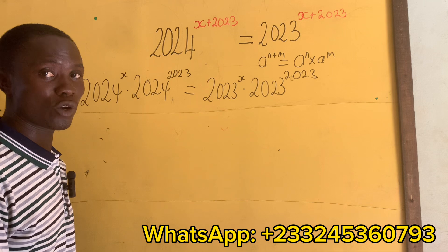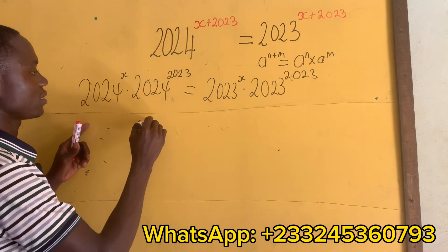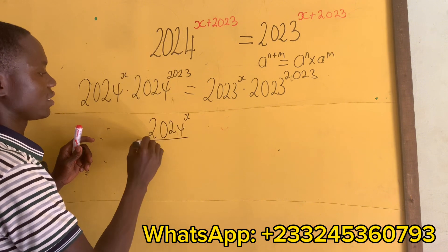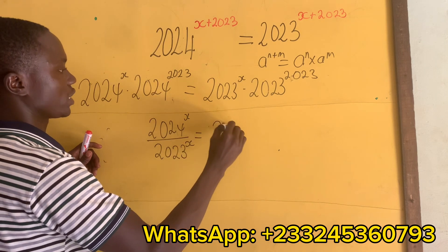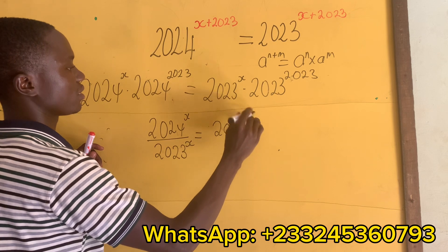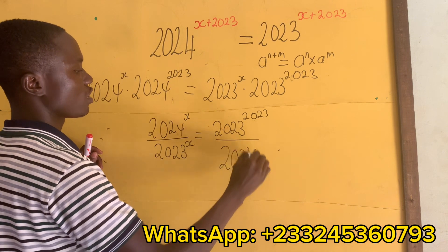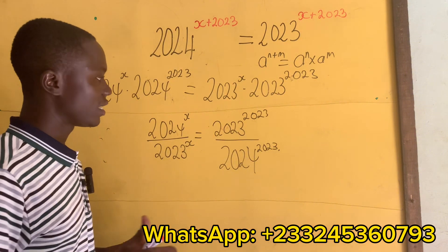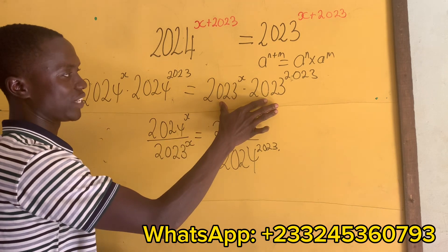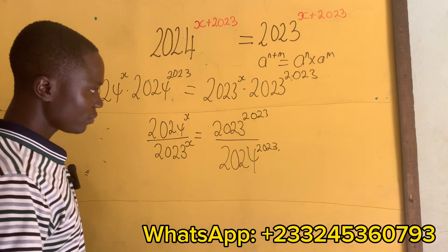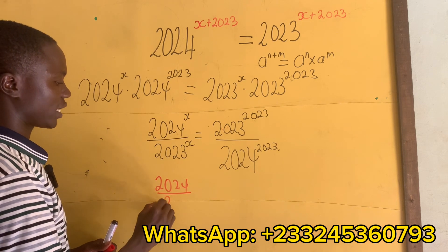We are not using calculators, so we are not going to take any logarithm — that will not help us. So this is the same as 2024 to the power x divided by 2023 to the power x, equals 2023 to the power 2023. Now, what can we do? We have 2024 divided by 2023.